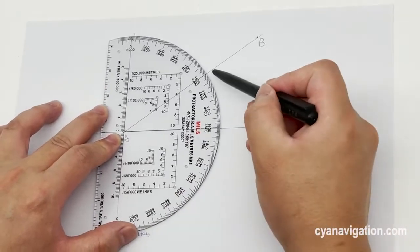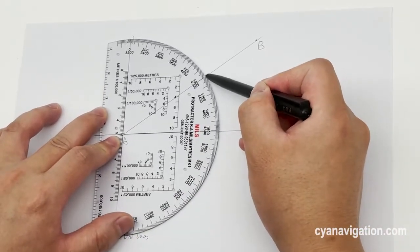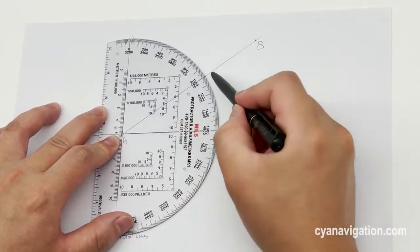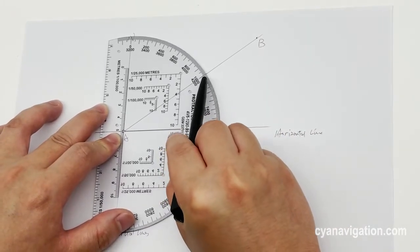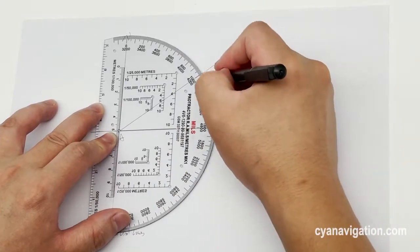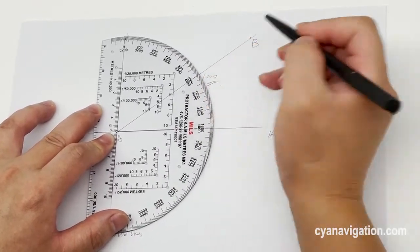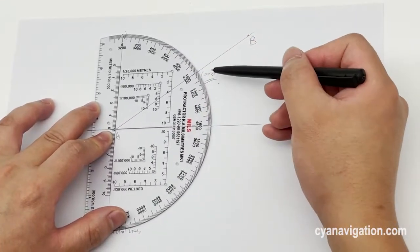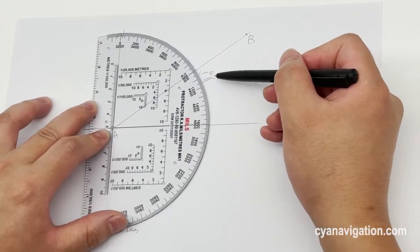You can see this line with its outer scales which reads 100. This indicates its grid bearing is 100.